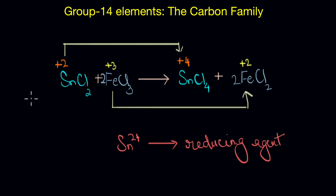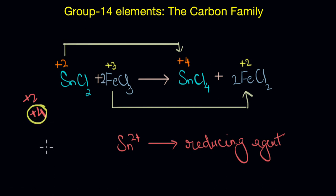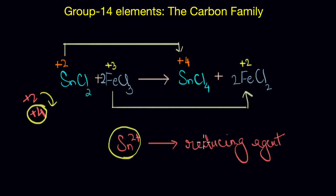Now remember, plus 2 and plus 4 oxidation states are quite common for tin, and we can find many compounds in these oxidation states. However, tin is much more stable in the plus 4 oxidation state, and this is why it is fairly easy to convert tin compounds from plus 2 to plus 4 — and precisely the reason why Sn²⁺ ions in solution are strong reducing agents. As you can see, depending on the stability of the oxidation states, group 14 elements can act as an oxidizing or a reducing agent in a particular reaction.